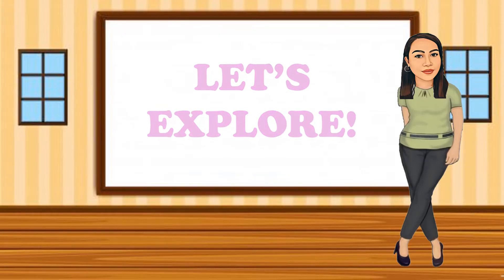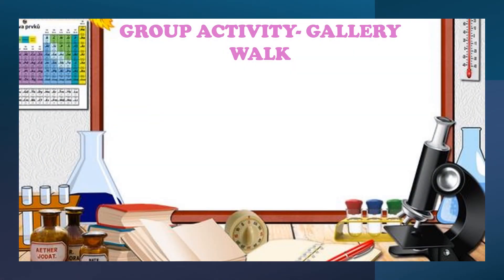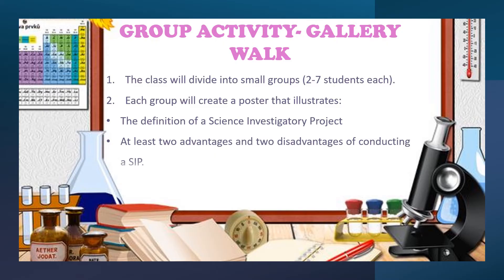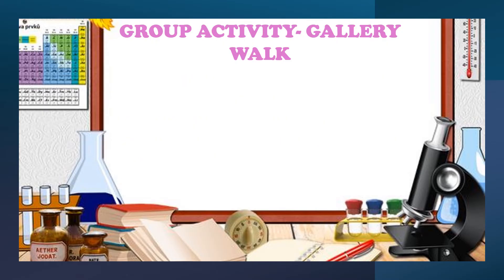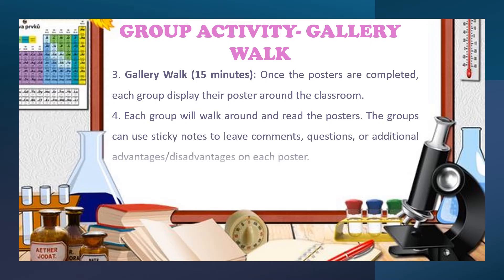Let's explore! I hope you're all as excited as I am for our activity today — a gallery walk. This will be a fun and interactive way for us to dive deeper into our lesson. Here are the instructions: First, the class will divide into small groups with three to seven students each. Each group will create a poster that illustrates the definition of a Science Investigatory Project and at least two advantages and two disadvantages. The gallery walk will be 15 minutes. Once the posters are completed, each group will display their poster around the classroom, walk around to read others' posters, and use sticky notes to leave comments, questions, or additional advantages and disadvantages.